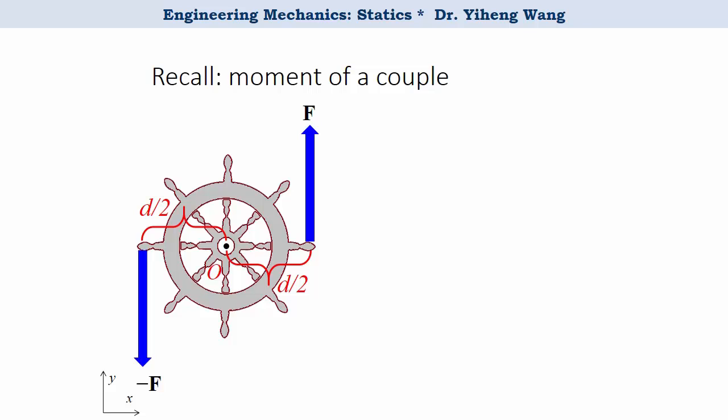the two forces acting on this wheel are indeed in equilibrium. But this only means that they don't cause translational motion. We already learned that these two forces make a couple moment, Fd, which is a free moment that causes rotational effect of this wheel.